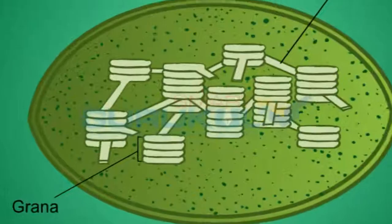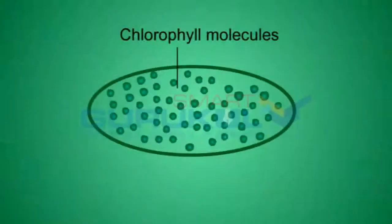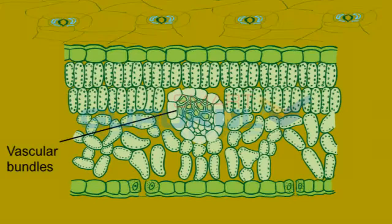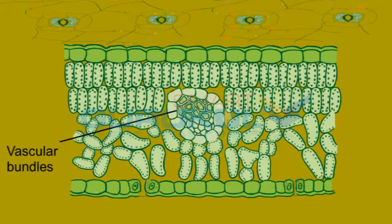Inside the thylakoid membranes, chlorophyll molecules are situated. These chlorophyll molecules trap solar energy from the sunlight. Vascular bundles are located in the central region of the leaf.